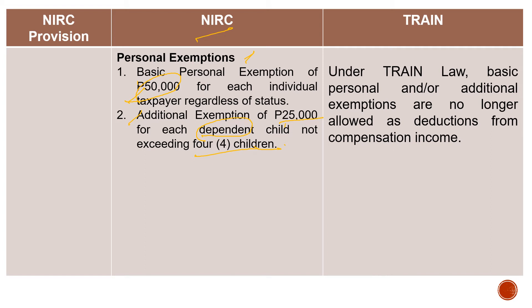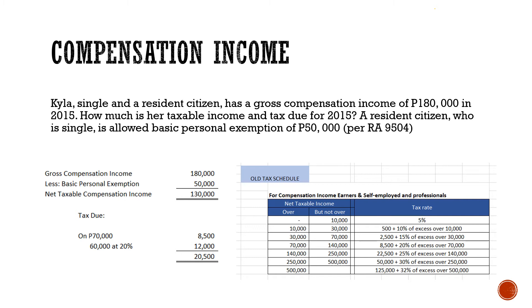This is another difference of the NIRC and Train Law. Again, since January 1, 2018, ang tax law implemented in our taxation system is the Train Law na. Going back doon sa ating example, kung titignan, the income was received year 2015. Anong tax law ang gagamitin natin in the computation of the tax due for Kyla? Ibig sabihin, NIRC yung gagamitin natin kasi nga, the Train Law took effect January 1, 2018. Since 2015, itong tax na kinocompute natin, ang mag-a-apply pa dito is NIRC.